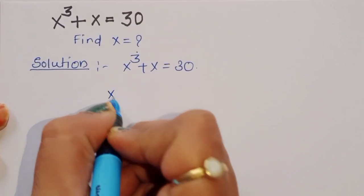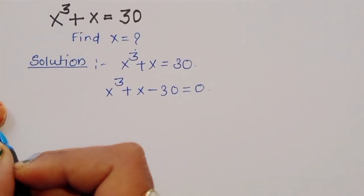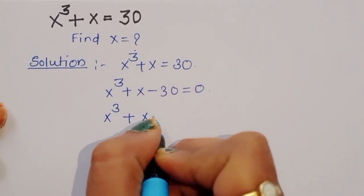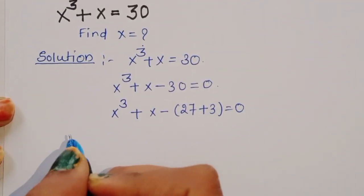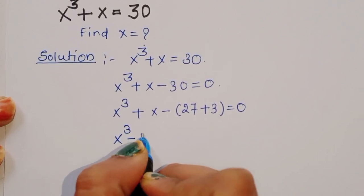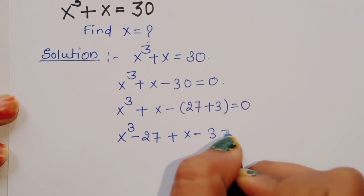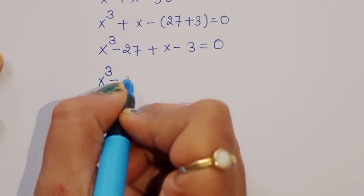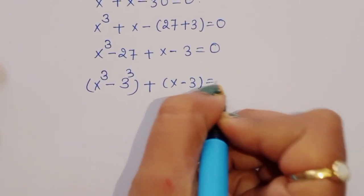We can write this as x³ + x − 30 = 0. Now we can split 30 as 27 + 3, so x³ + x − 27 − 3 = 0. By rearranging terms: x³ − 27 + x − 3 = 0.